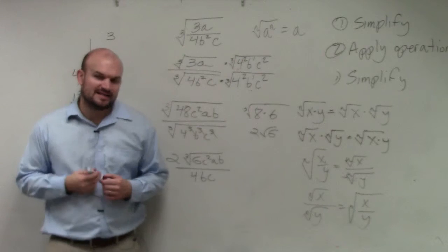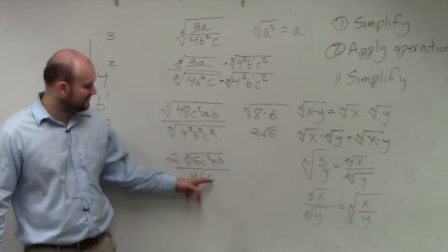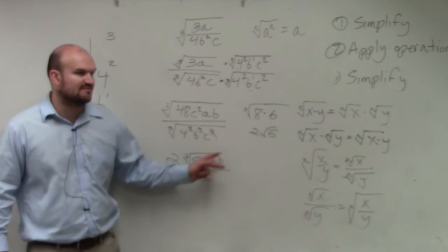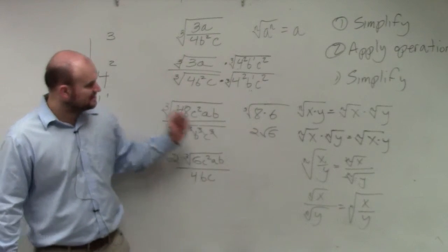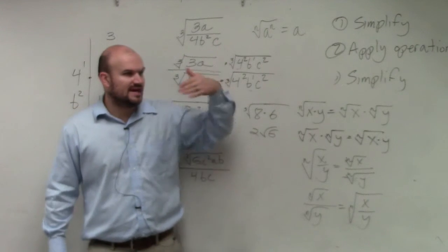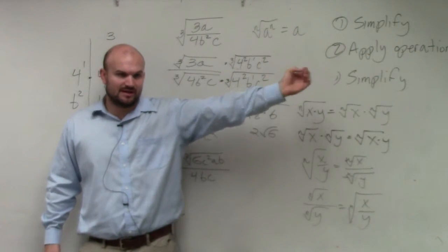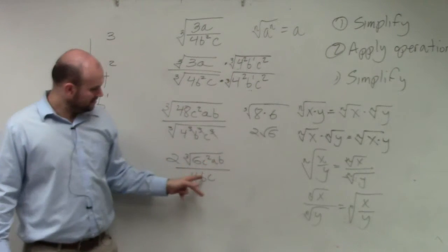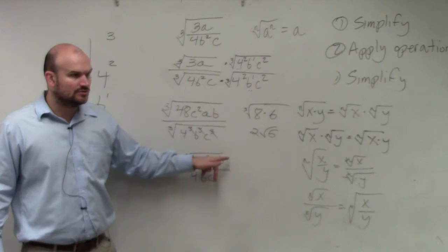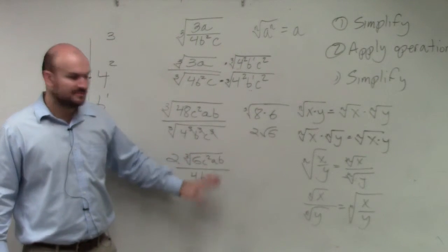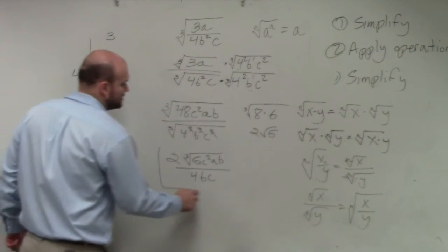A student asked me last class period — which is a good question — they said, why can't you divide the c's? Why don't the b's divide out? In the same respect, just like how you can't take a number outside of a radical and multiply it to a number inside a radical, you can't take a number outside of a radical and divide it into a radical. So this would be your final answer.